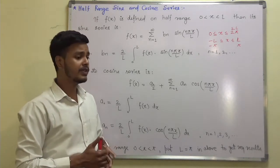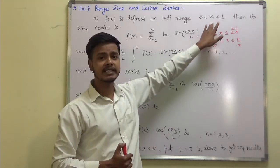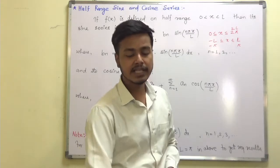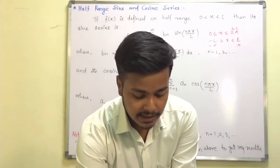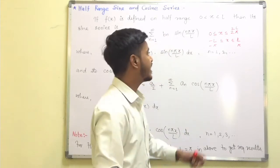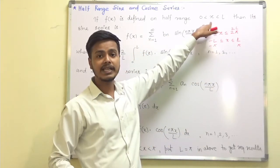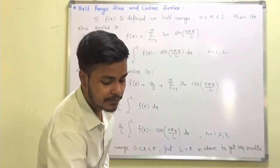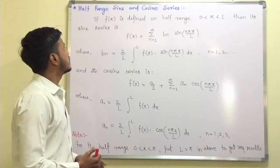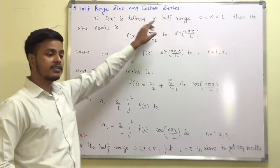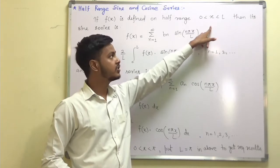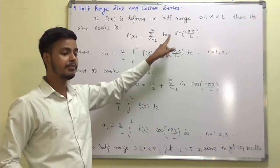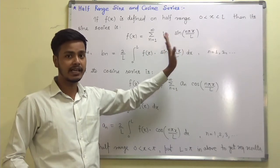So here we have the range of this type. When talking in general, we take the interval as l, so that is why we write 0 < x < l. Now, if f(x) is a function defined on this half range, then its sine series is f(x) = Σ (n=1 to ∞) bₙ sin(nπx/l).